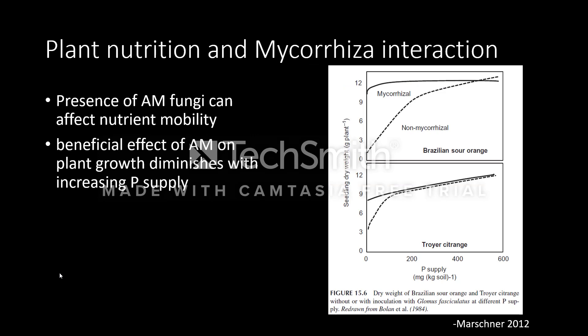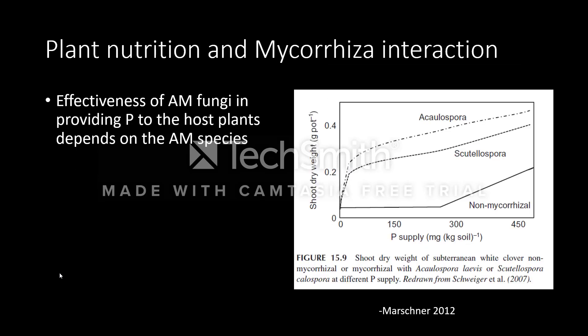Nutrient mobility is affected by the presence of AM fungi. Plant dry weight in both citrus and sour oranges infected with AM fungi were both higher than plants without AM fungi, but growth eventually slows down as phosphorus supply in the soil increases above 200 mg per kg soil. The species of AM fungi also affects growth of plants. A higher shoot dry weight was observed in plants that form relationships with Glomus as compared to Scutellospora and non-mycorrhizal interactions.